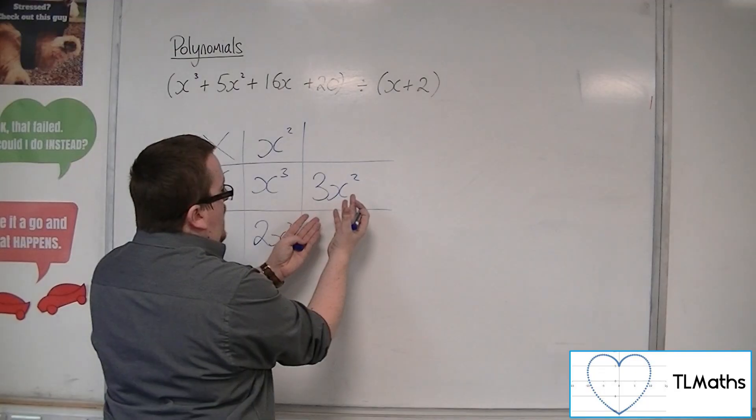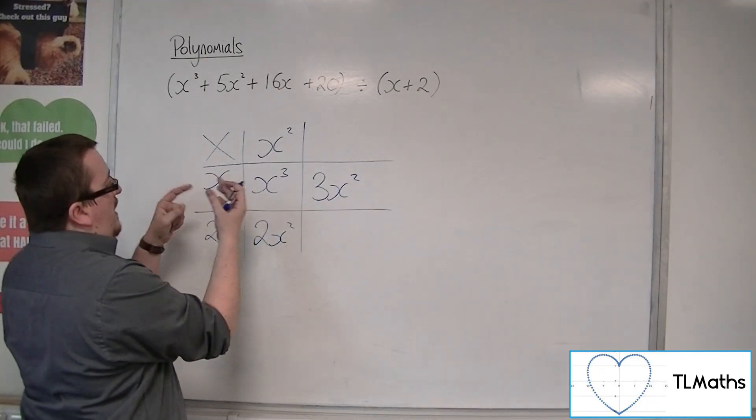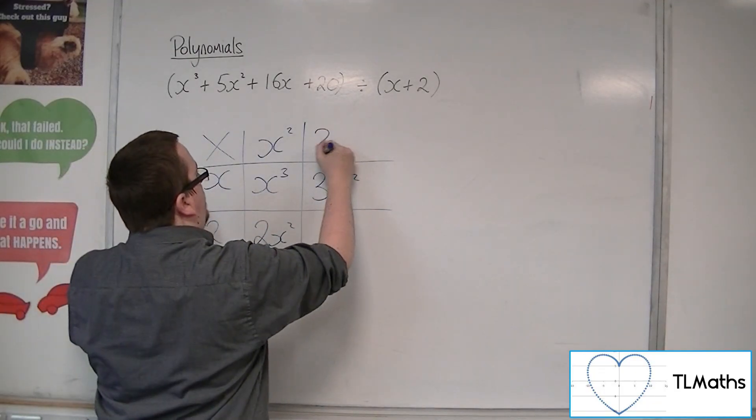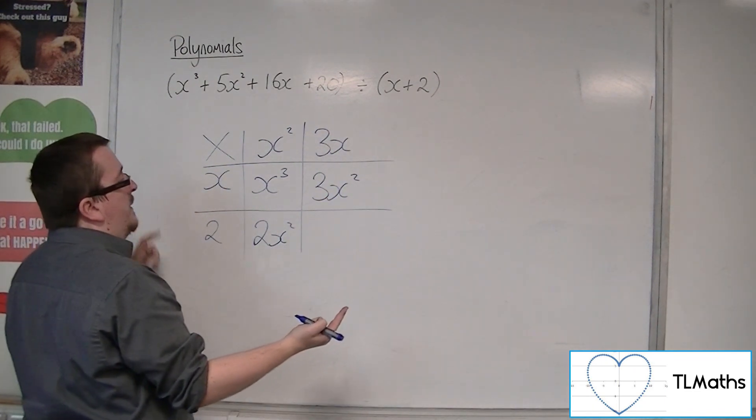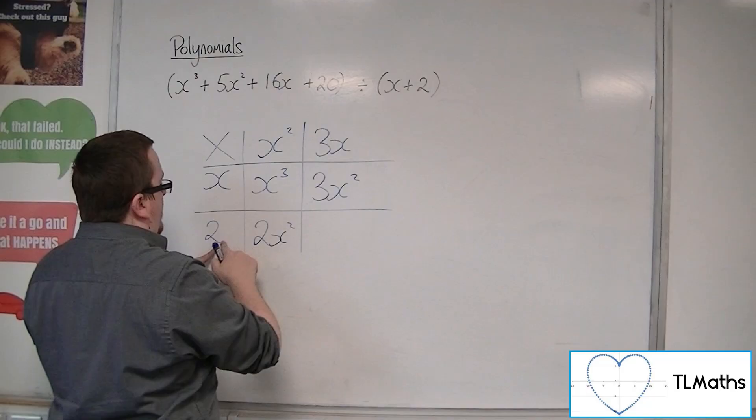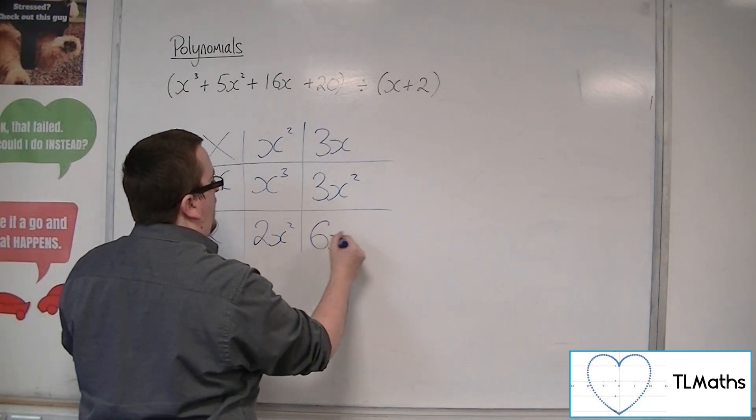Now, if a 3x squared is there, then I must have had 3x go there. 3x times x will make the 3x squared. If that's 3x, then I've got it multiplying with a 2 to make 6x.